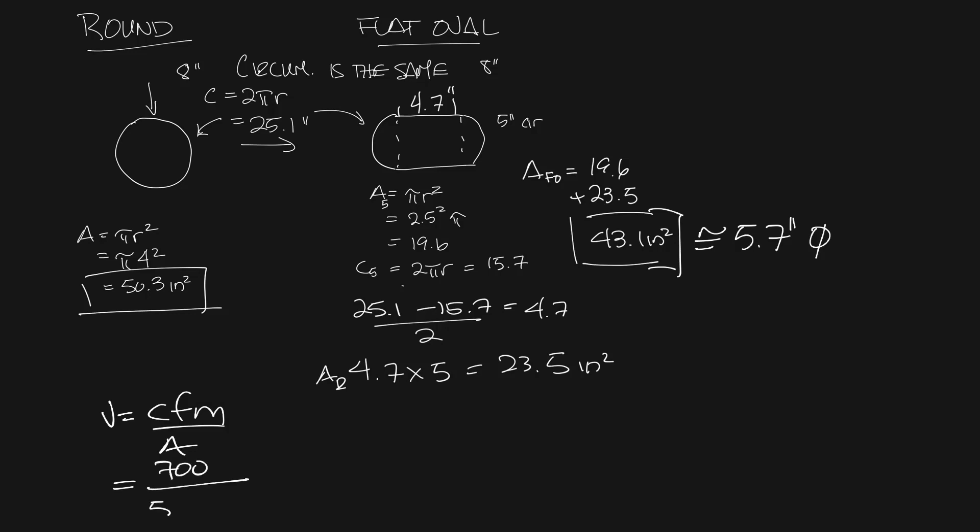That would be 700 divided by 50.3 and then we're going to divide that by 144 to get us into feet. And that is about 2004 feet per minute for 700 CFM through an 8 inch round.